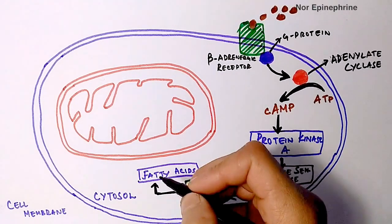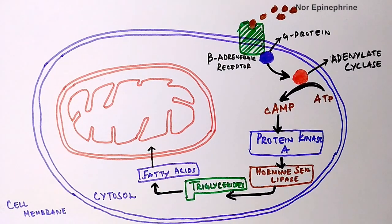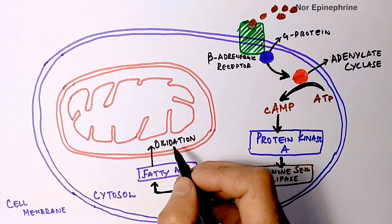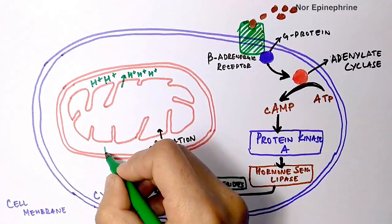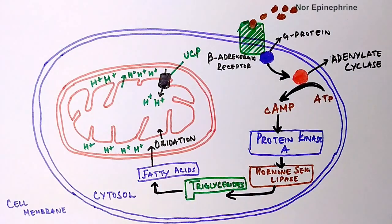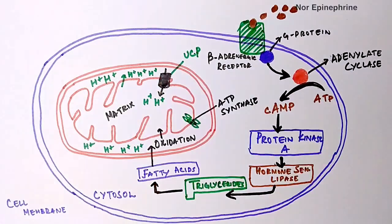When fatty acids are transported to the mitochondria, oxidative phosphorylation occurs. In oxidative phosphorylation, the electron transport chain pumps protons (H⁺) outside the matrix of the mitochondria. These protons outside the matrix then need to re-enter the matrix. They can either go through ATP synthase to produce ATP, or they can take another route — through UCP, the uncoupling protein — and instead produce heat.